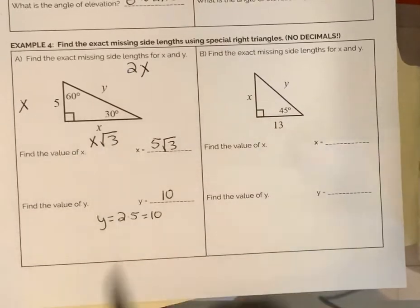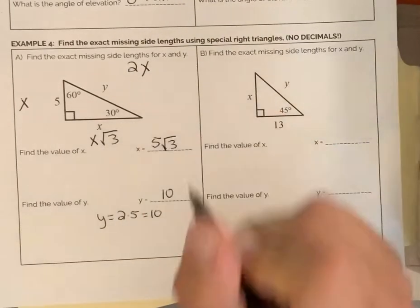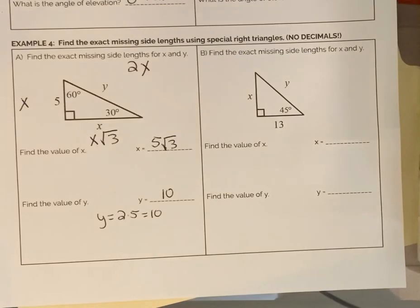You could use trig to figure out those ratios. It's just if you have those special triangles memorized, it goes a lot faster.